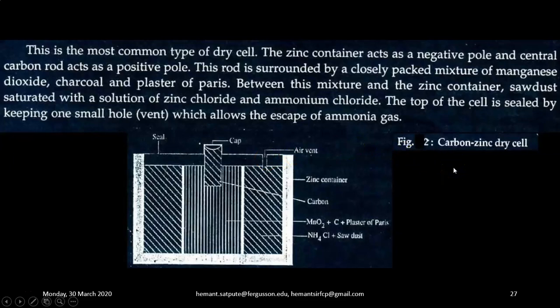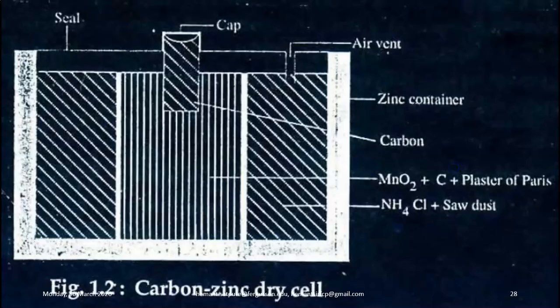This is the internal structural diagram of carbon zinc dry cell. This is the amplified view of the same one. So, here you can see the zinc container as negative electrode, carbon rod as positive electrode. Then manganese dioxide plus carbon plus plaster of Paris as the electrolyte. Then NH4Cl, ammonium chloride and sawdust as the packaging material. Then there is a seal over here. There is a cap, metal cap put on the positive electrode. And there is an air vent to escape the ammonia gas which generates during the process.